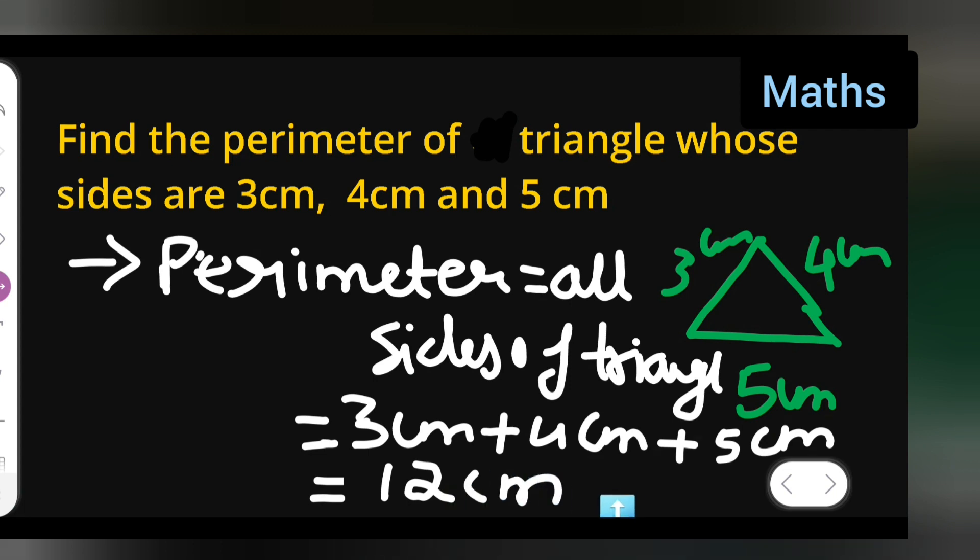So I hope you all have understood how to find the perimeter of the triangle with the given sides. Okay, and thanks for watching. If you have not understood any of the concept or anything you all can just comment below the link and thanks for watching.